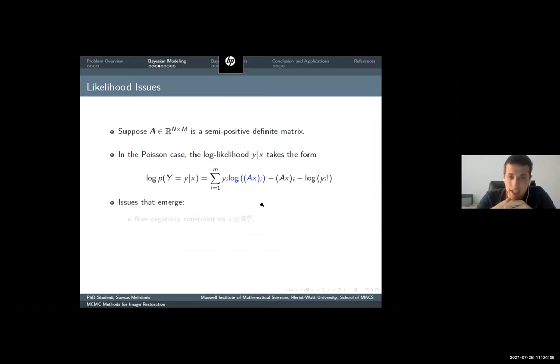The problem with such likelihoods is that their nature imposes some irregularities and constraints. Suppose that A is a positive semi-positive definite matrix. In the Poisson case, the log likelihood is going to take this form here. We already can spot some issues. First, we have a non-negativity constraint on X. Second, the log likelihood is not differentiable at zero. This is an issue because many reconstruction methods demand your log likelihood being differentiable.